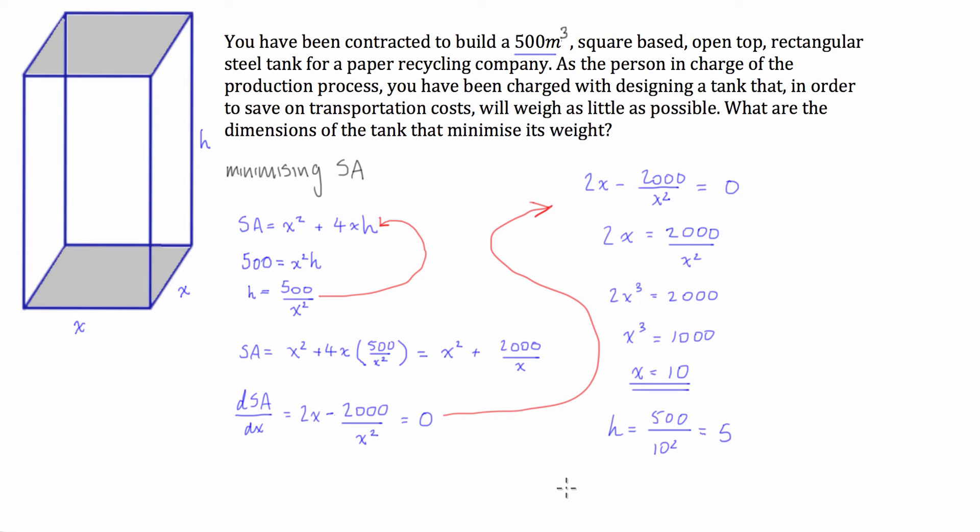So we know that then, so the minimum weight will occur when X is equal to 10 meters and height is equal to 5 meters.